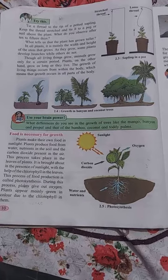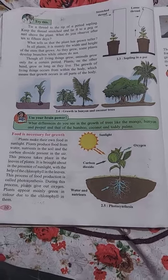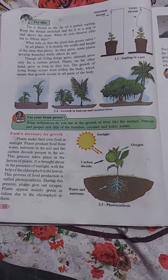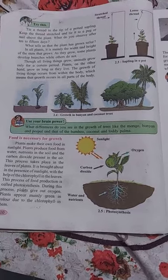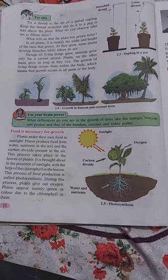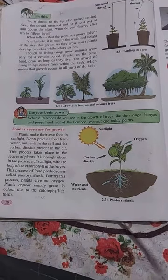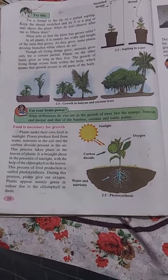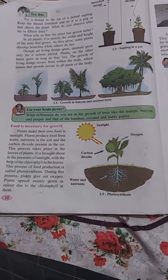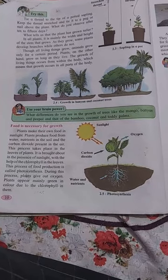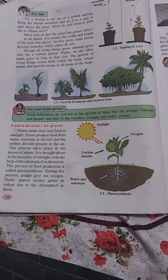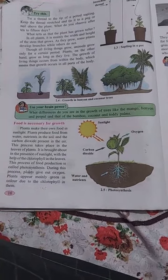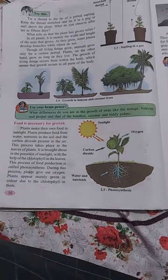The growth of living things occurs from within the body, which means that growth occurs in all parts of the body. Use your brain power: what differences do you see in the growth of trees like mango, banyan and peepal, and that of the bamboo, coconut and toddy palms?